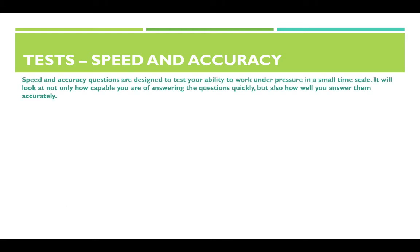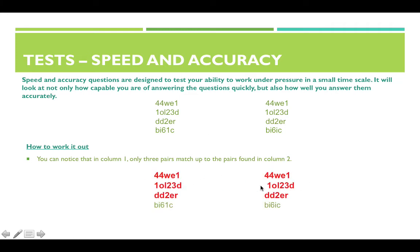Speed and accuracy questions are designed to test your ability to work under pressure in a small timescale — assessing both how quickly and how accurately you answer. You need to work out whether two columns match. The first three pairs match: '4-4-W-E-1' matches '4-4-W-E-1'; '1-O-L-2-3-D' matches '1-O-L-2-3-D'; 'D-D-2-E-R' matches 'D-D-2-E-R'. However, the last pair doesn't match because one has 'I-C' and the other differs. So three pairs match.